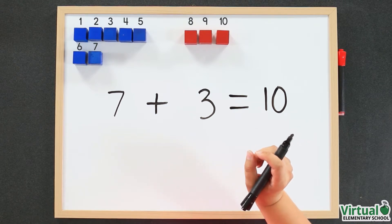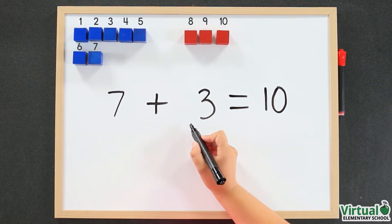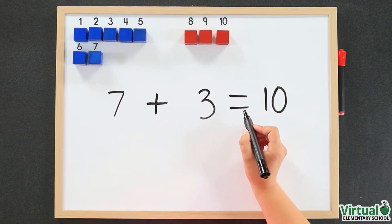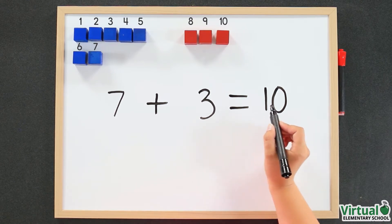There are the addends, seven and three, the plus sign to show that we are adding the addends together, the equal sign to show that the amount on both sides is the same, and the sum of the two numbers: seven plus three equals ten.